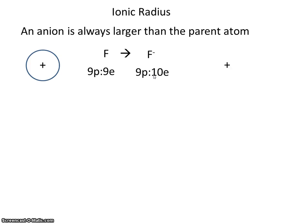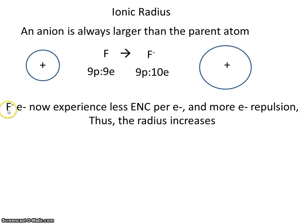Here's a little cartoon illustration showing that an anion is always larger than the parent atom. Fluorine's electrons now experience less effective nuclear charge per electron and more electron repulsion. Thus, the radius increases.